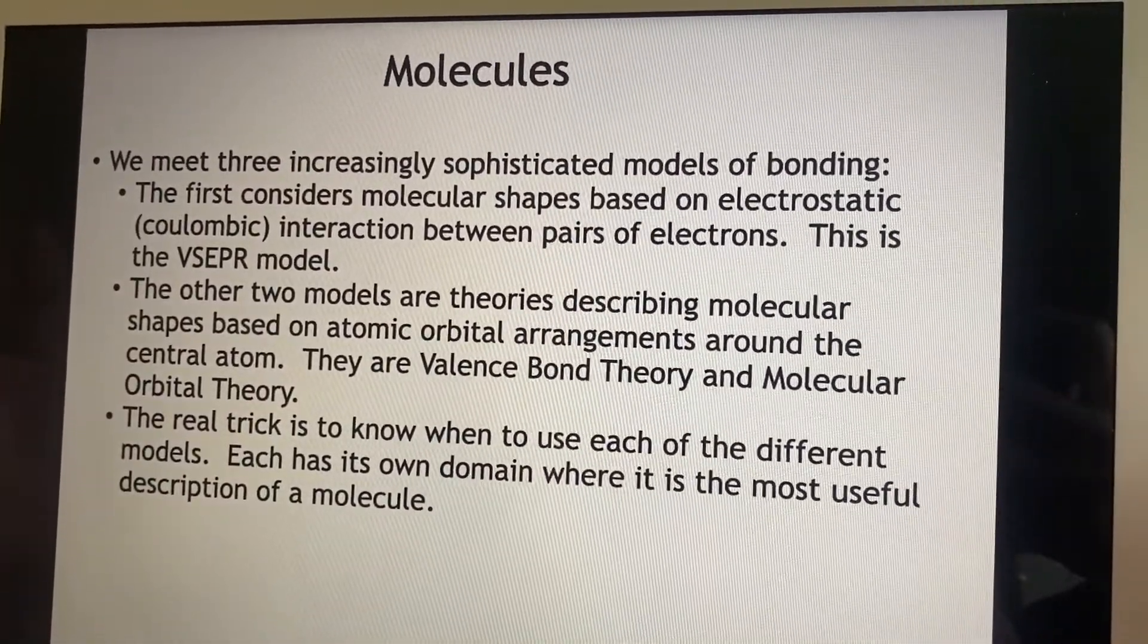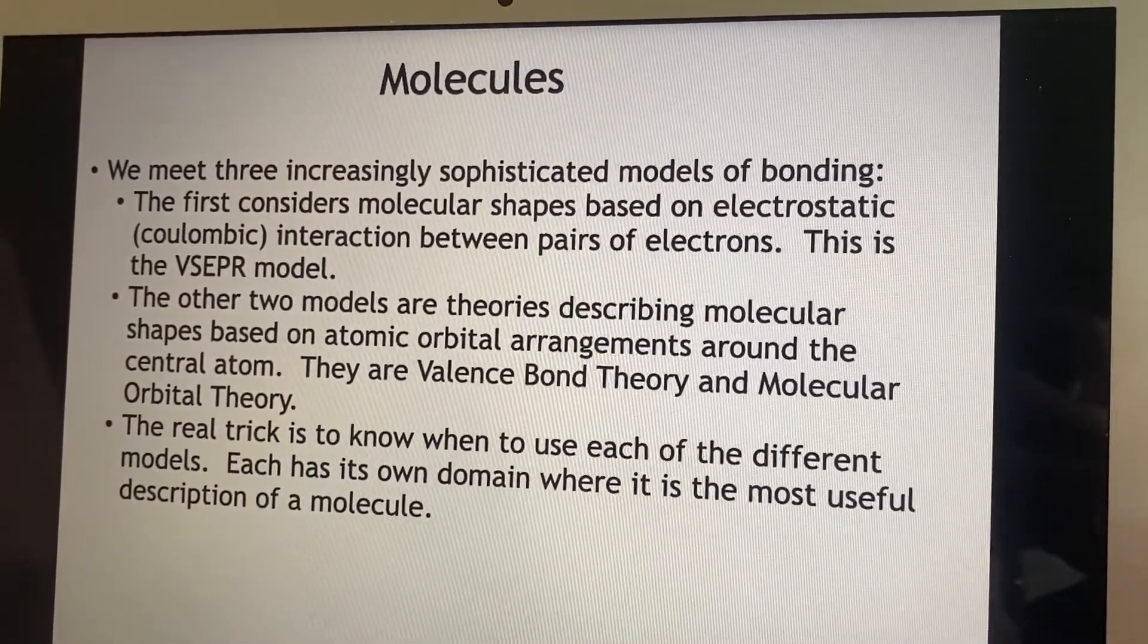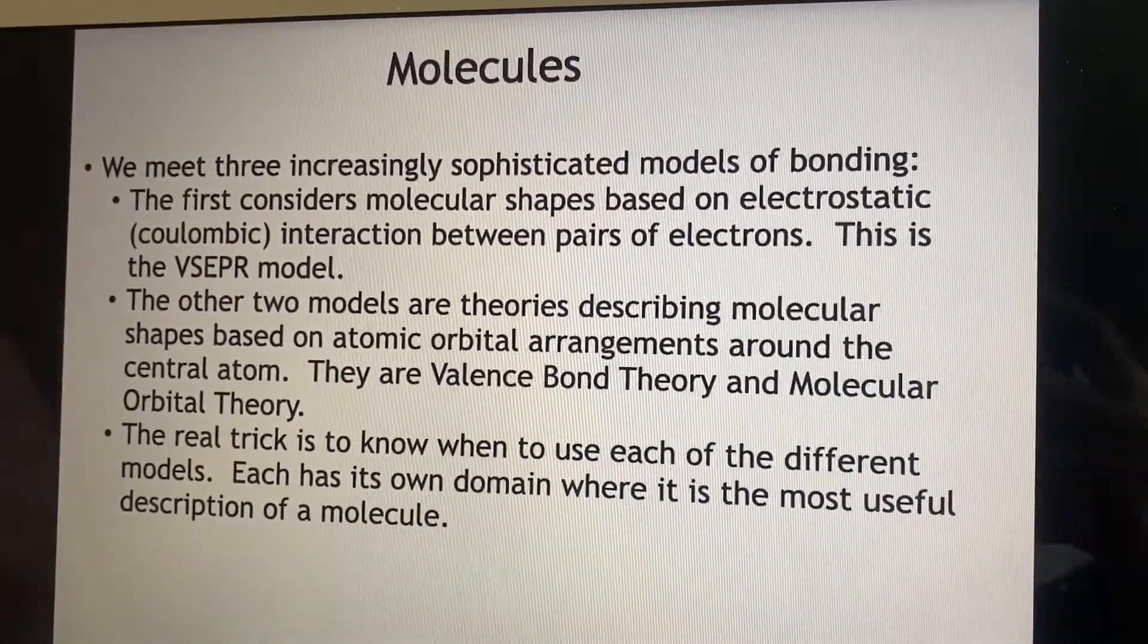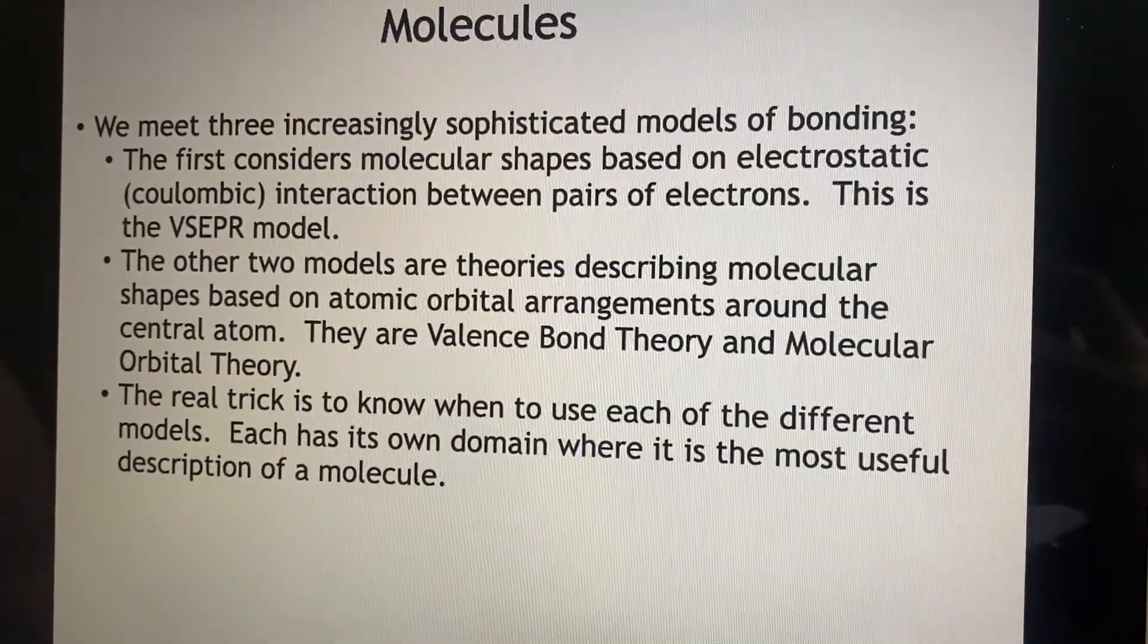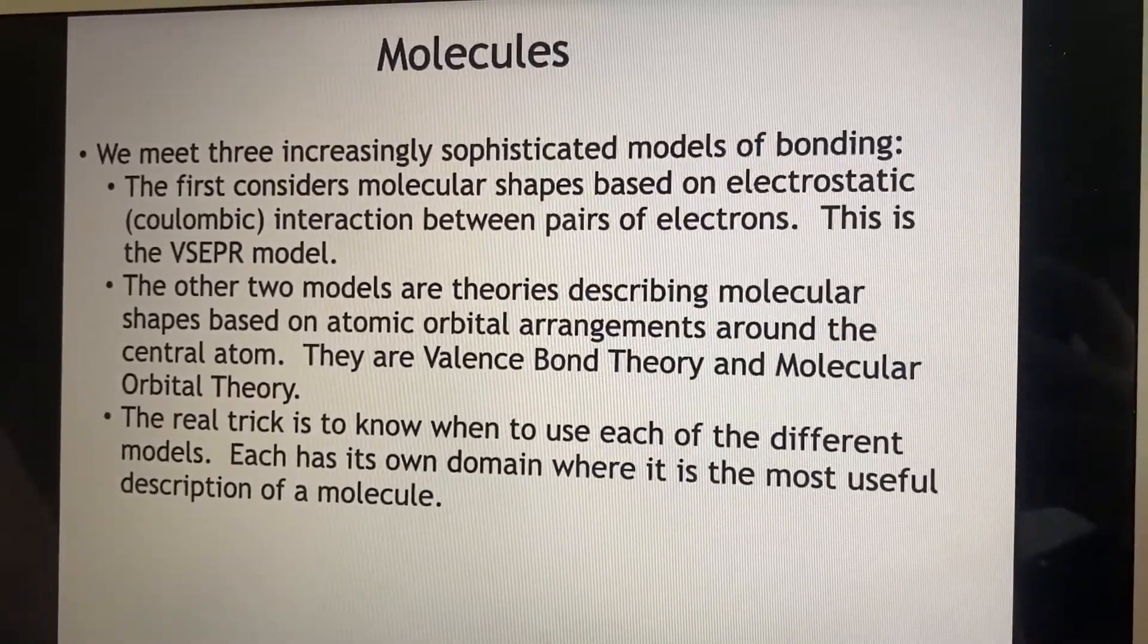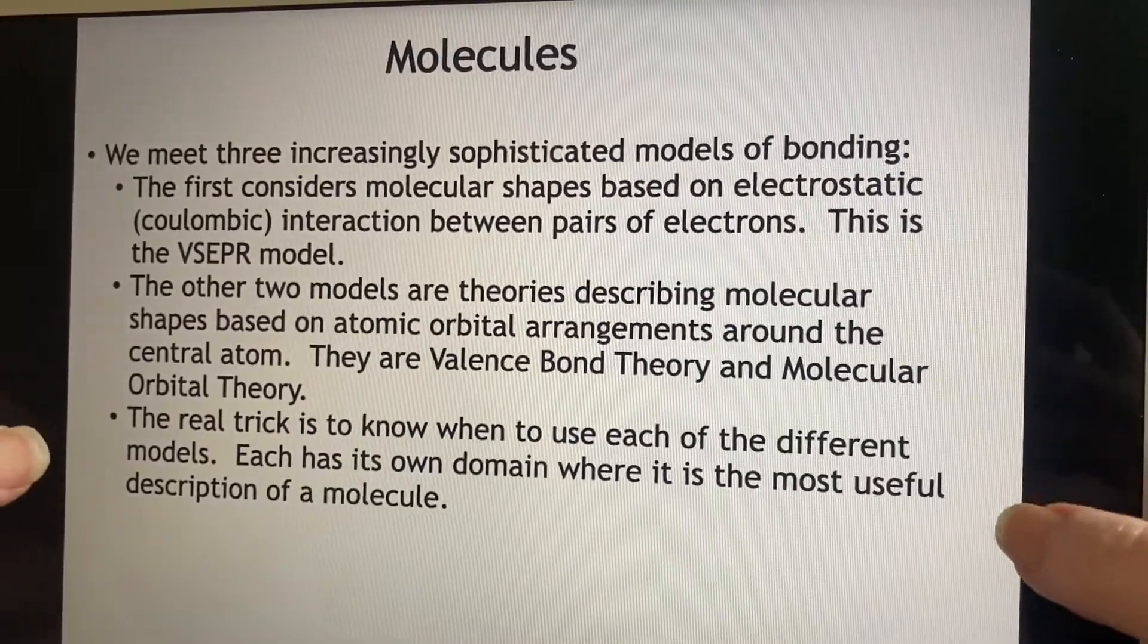You know, I think I'll call that a vesper. The other two models have molecular shapes based on the atomic orbital arrangements about the central atom, and they are called valence bond theory and molecular orbital theory.